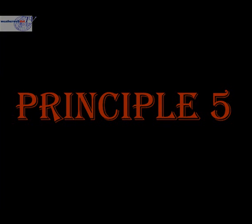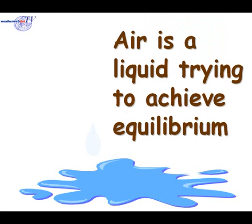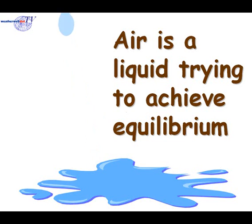Principle 5. Air is simply a liquid that is trying to achieve equilibrium. The atmosphere acts exactly the same way as any other liquid. If you look at water flowing in a stream, it flows in one particular direction, but what it's trying to do is to flatten itself out and achieve its ideal state — it wants to be in equilibrium. Of course, the atmosphere can never achieve this, partly because of the rotation of the earth and other disturbances taking place within it. But just think of the air as always trying to achieve a perfect balance.